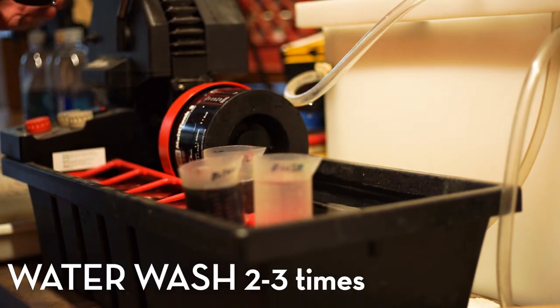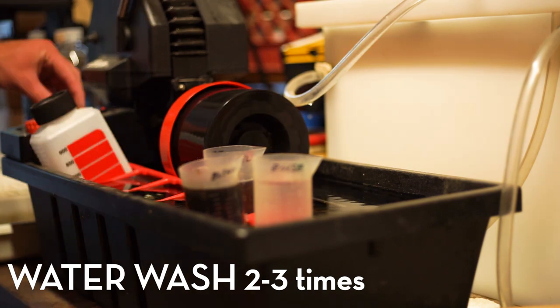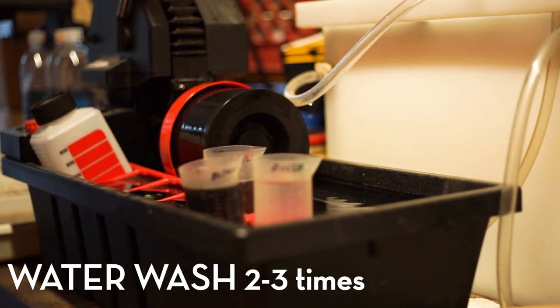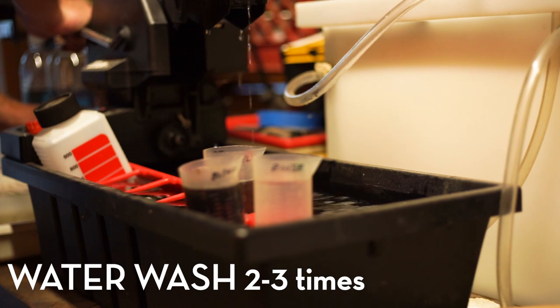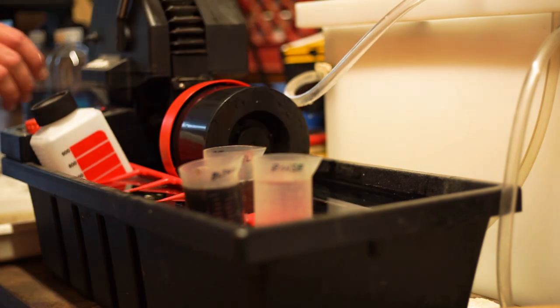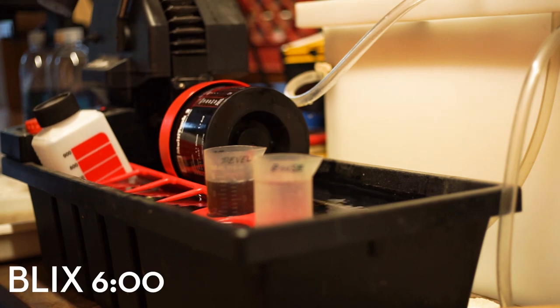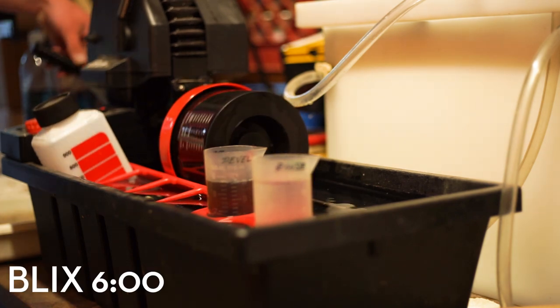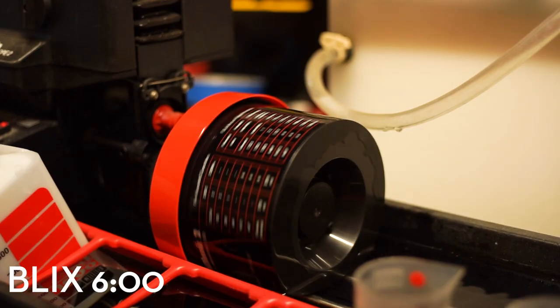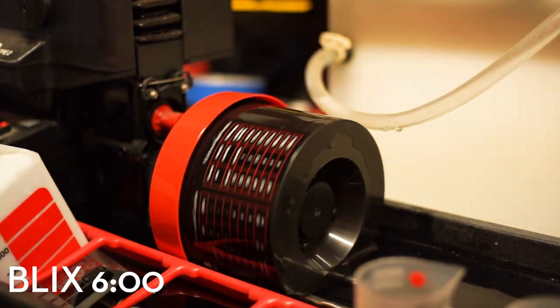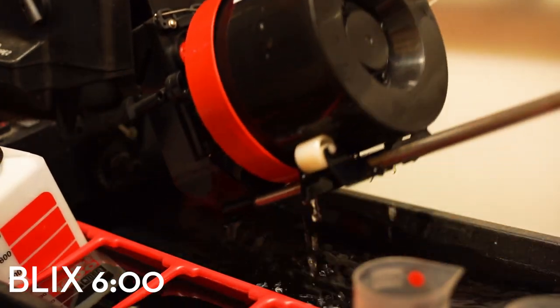After that, I put a little bit of water in and do about two to three washes. I mostly do this because I reuse my chemicals and I don't want to taint the rest of my chemicals. Then you pour in your blix which goes for six minutes. This basically takes your film and makes it light safe.